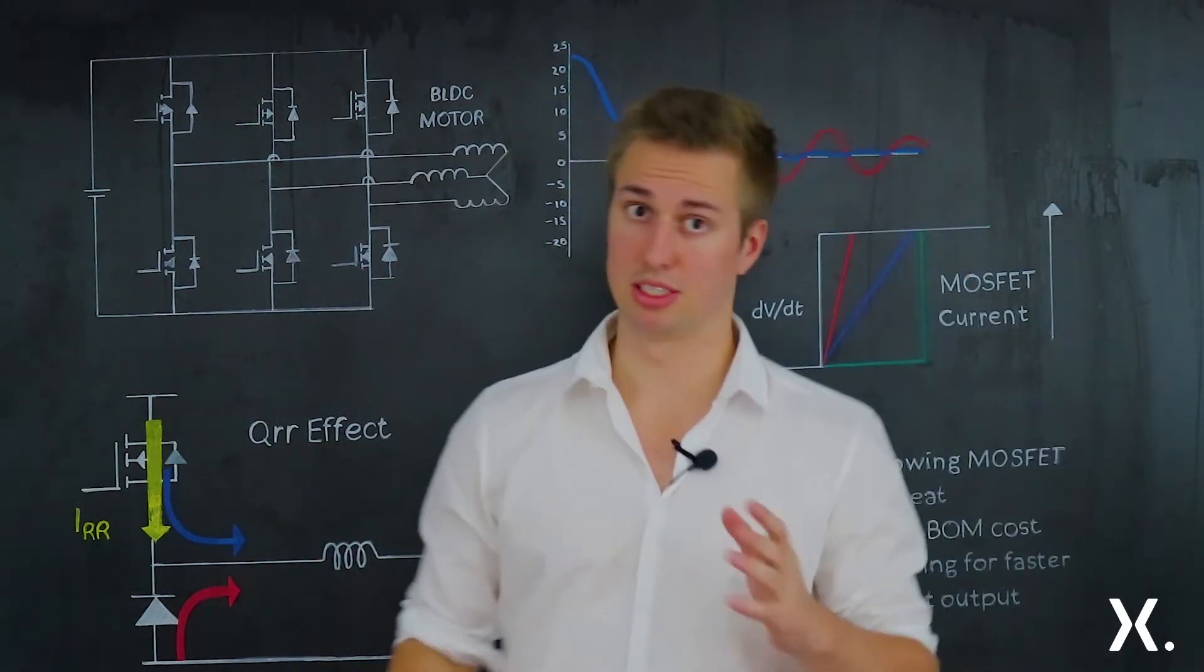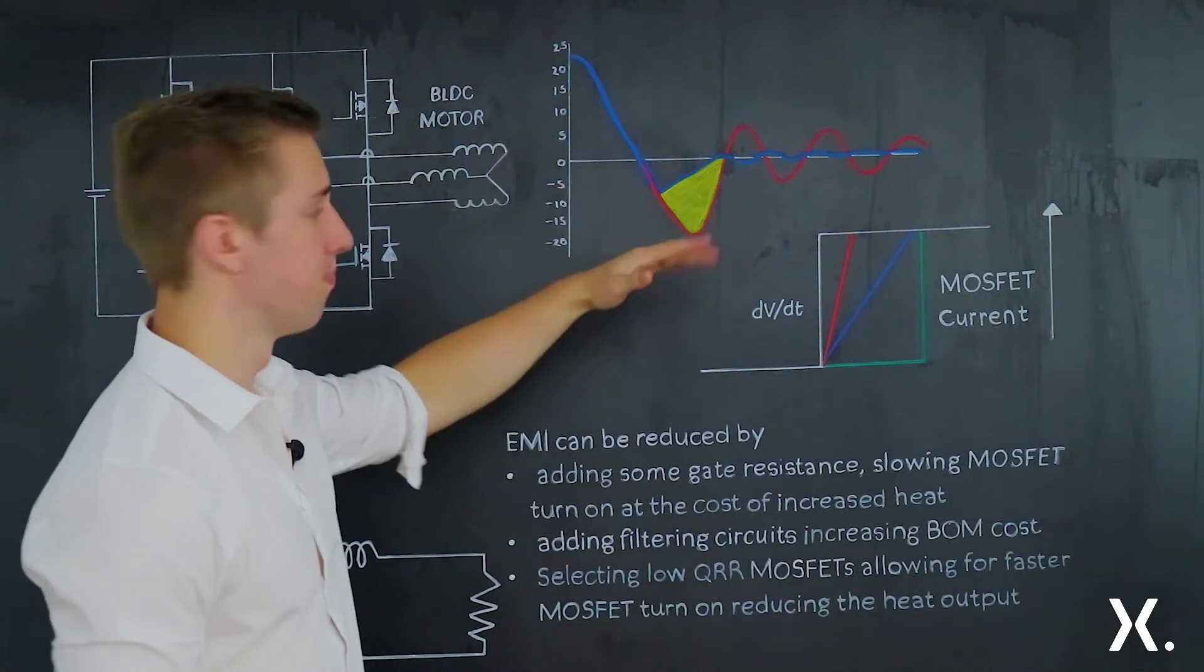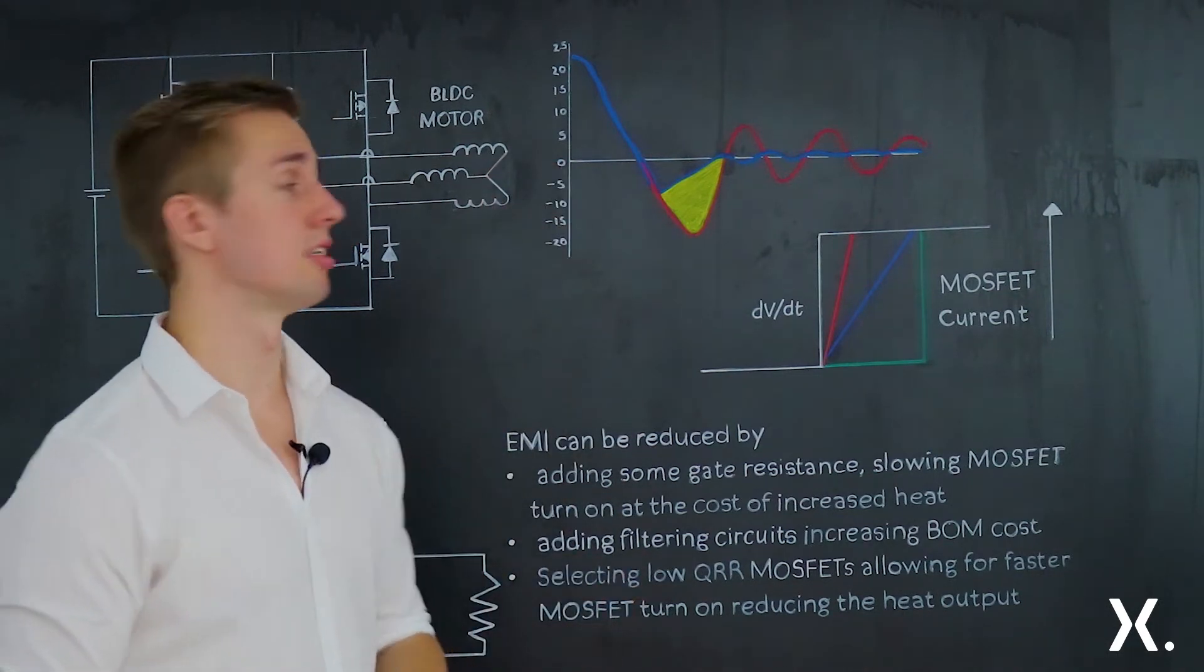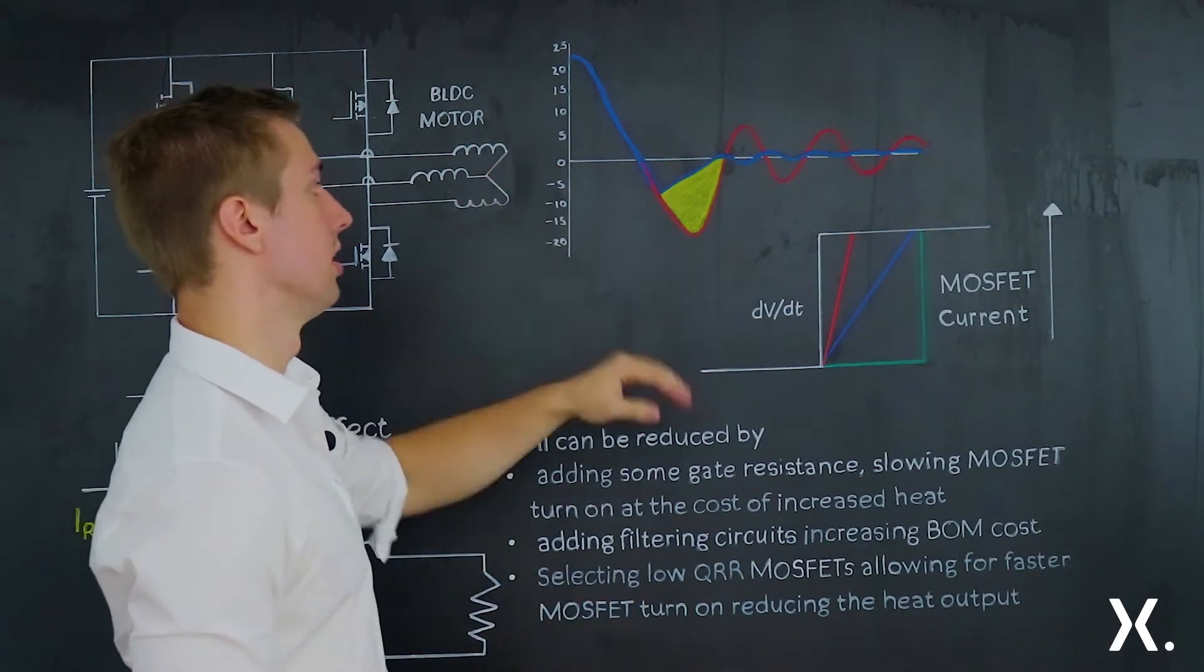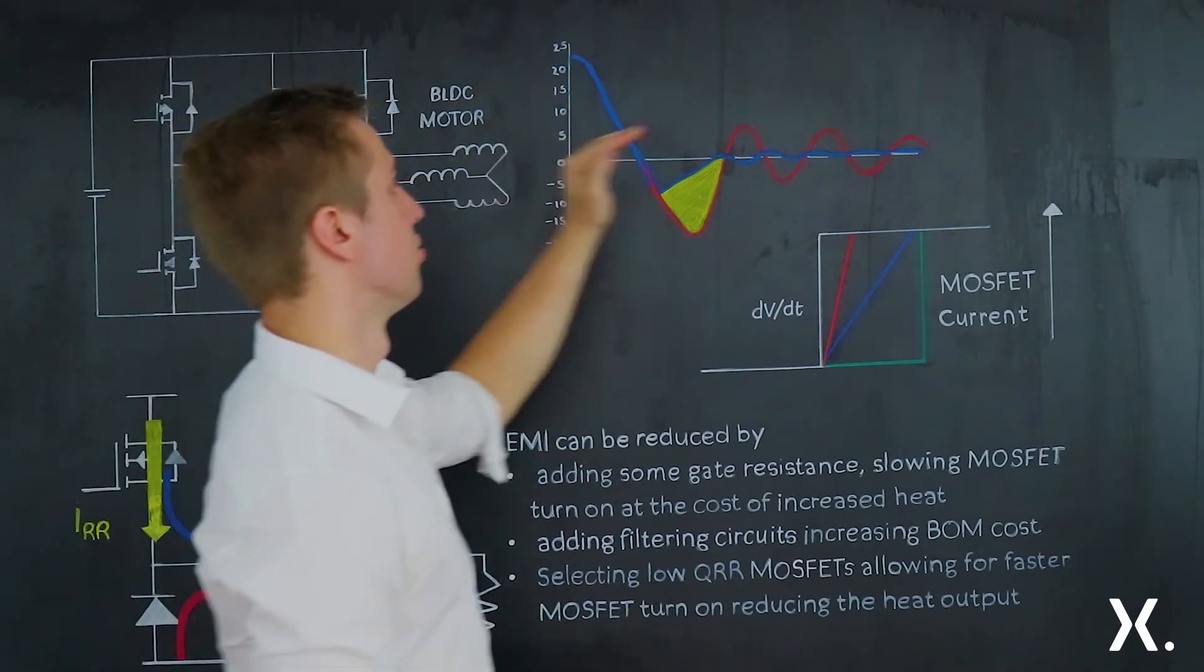This effect can be seen on this picture here. You have a red line and a blue line. The red line is a high QRR device and the blue line is a low QRR device. A high QRR device as you can see has a larger current spike and a larger ringing.